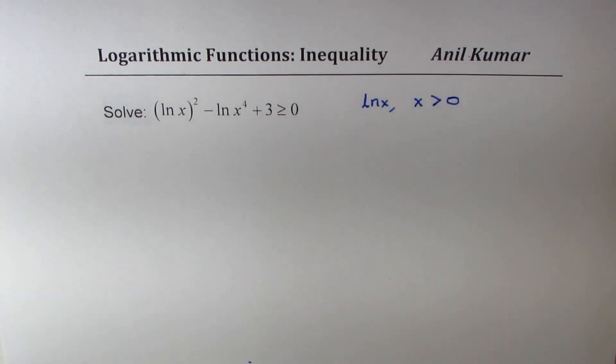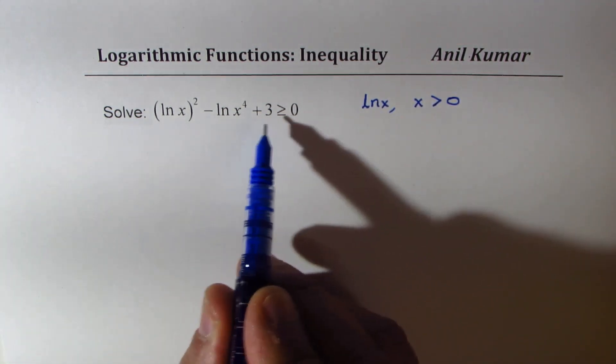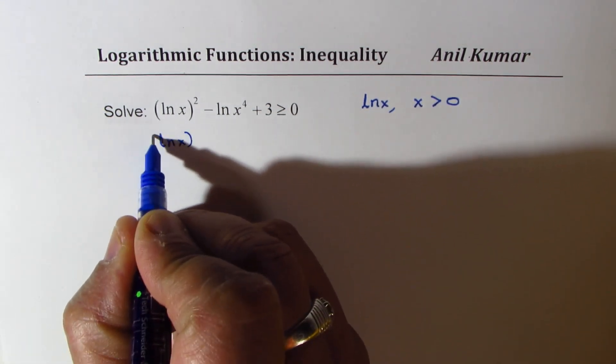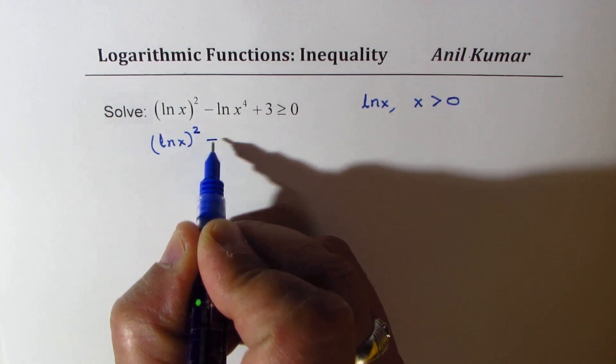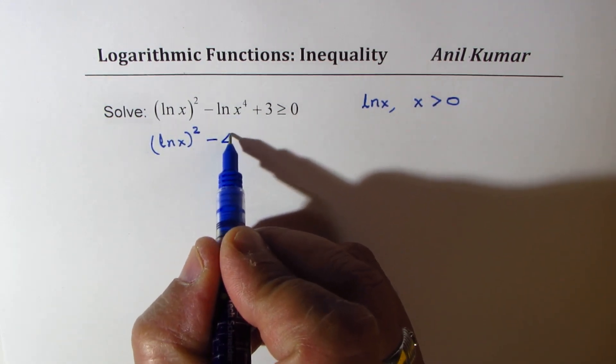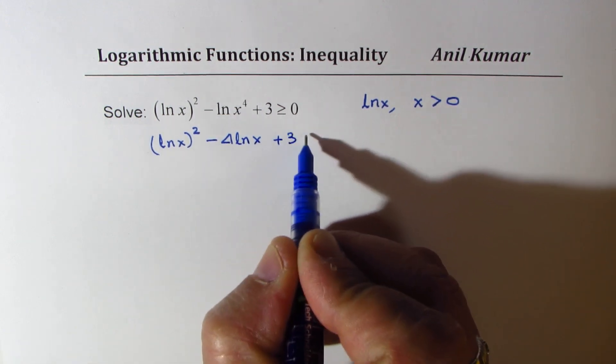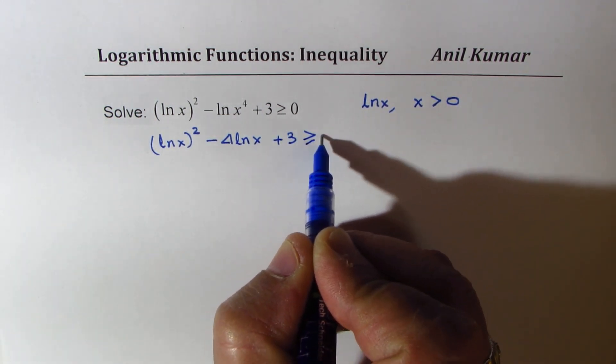Now we could rewrite this inequality as (ln x)² minus 4 ln x plus 3 greater than or equal to 0.